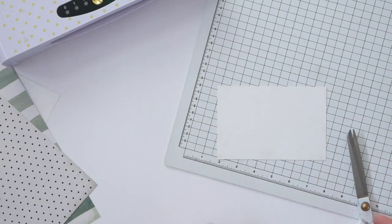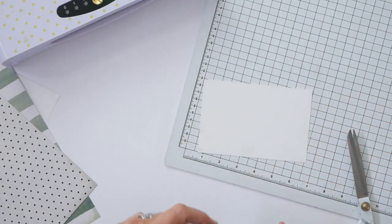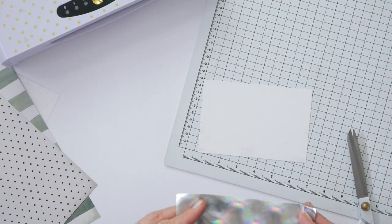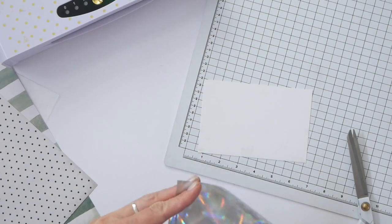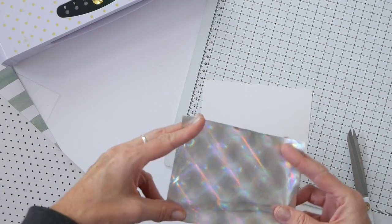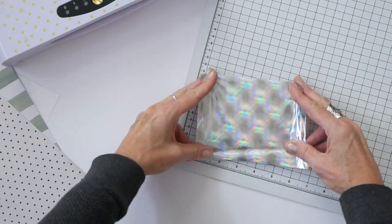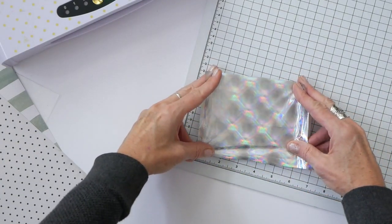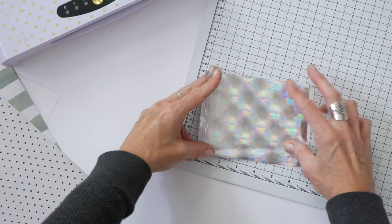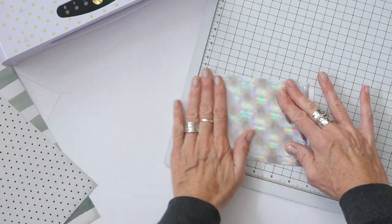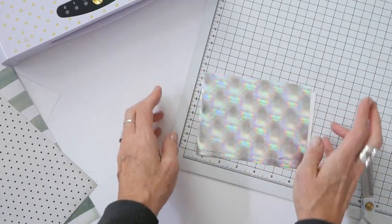What I want to do is very carefully, without any wrinkles, lay down the reactive foil on top of my adhesive cardstock. So let's get to work on that. And it started just sticking so we're just going to put it where it is.